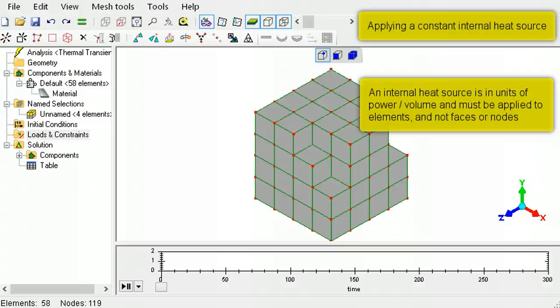If you know the internal power that is generated and want to apply it in units of power per volume, you must apply it to only elements, and not faces or nodes.